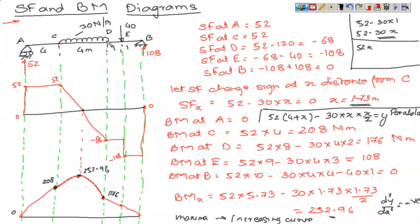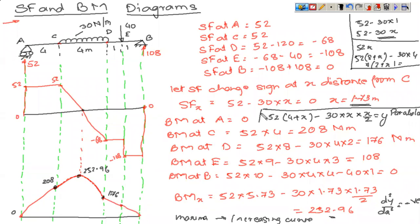From D to E the BM diagram is a straight line. The equation at a distance X from D is: 52 into (8 + X), minus 30 into 4 multiplied by (2 + X), because the UDL resultant is 2 meters from D. This is an equation of a straight line. Similarly from E to B it is again a straight line. This completes the understanding of shear force and bending moment diagrams for a beam subjected to uniformly distributed load.